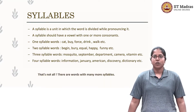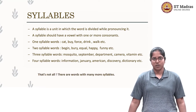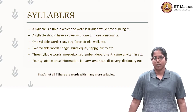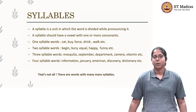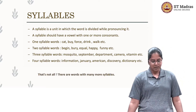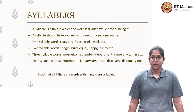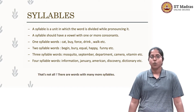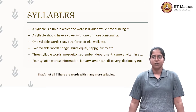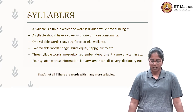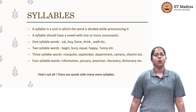Syllables are the unit in which a word is divided while pronouncing it, and the golden rule is that every syllable has to have a vowel but not necessarily a consonant. Let's look at a few words and see how many syllables they have. Cat, buy, force, drink, walk — these are one-syllabled words, or monosyllabic words.